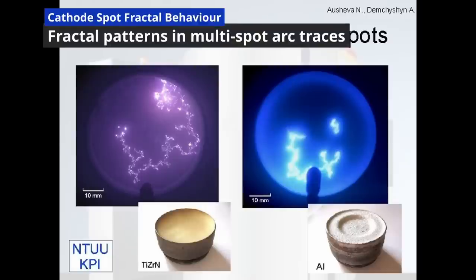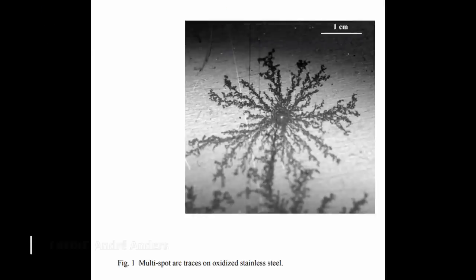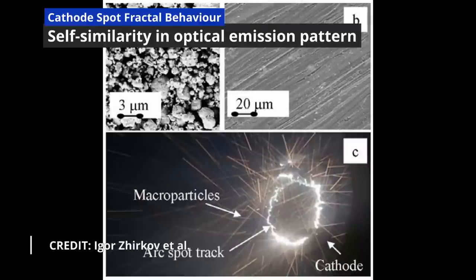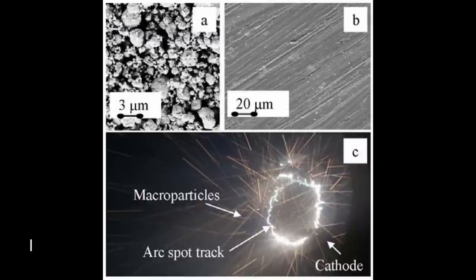Closely related to the random walk and self-avoiding walk patterns are those left on cathodes by multi-spot discharges. These patterns are remarkably similar to Lichtenberg figures. The fractal behaviour is also seen in the light distribution from the spots themselves, with self-similarity observed in optical emission patterns.